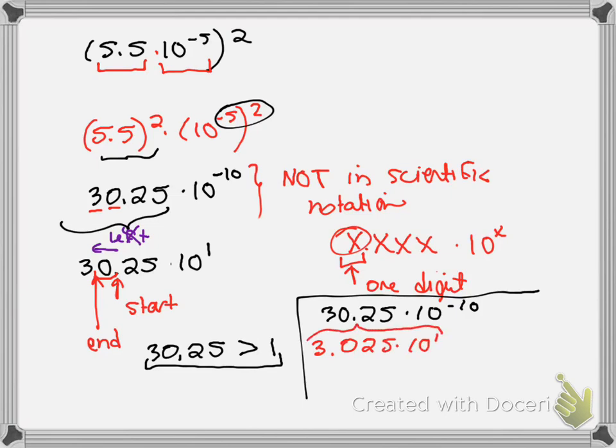But, guess what? This 10 to the negative 10th, he's still there. He hasn't gone anywhere. So, because I have these two 10 values here, I can combine those. I can use the product rule, and I can add the exponents to get my final answer.